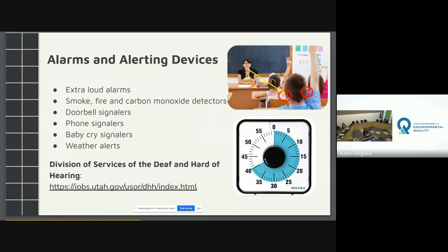For alarms and alerting devices used with our deaf and hard of hearing population: extra loud alarms, smoke, fire and carbon monoxide detectors, doorbell signalers, phone signalers, baby cry signalers, and weather alerts are commonly used. For more resources, the Division of Services for Deaf and Hard of Hearing has a link available. This AT isn't something we usually provide in the school setting, but our teachers teach students and families about these resources.